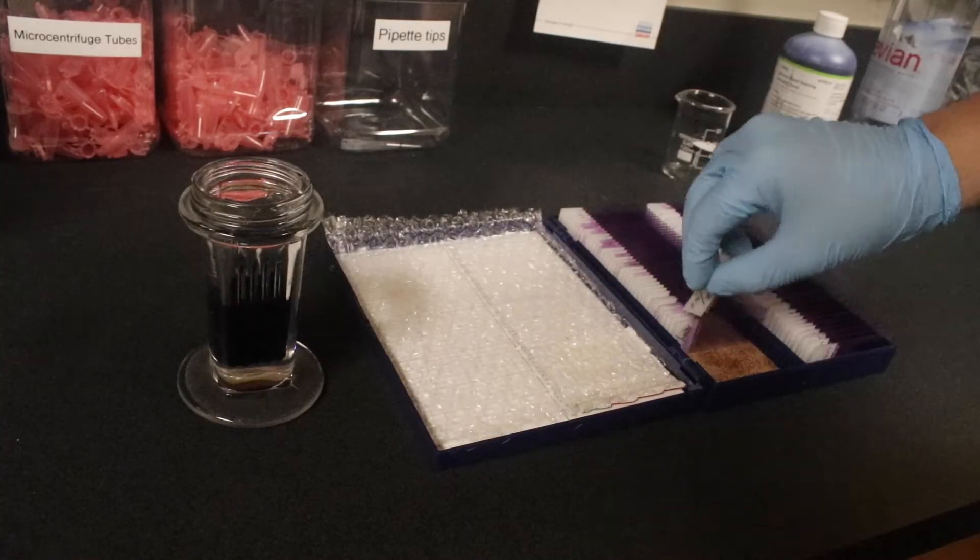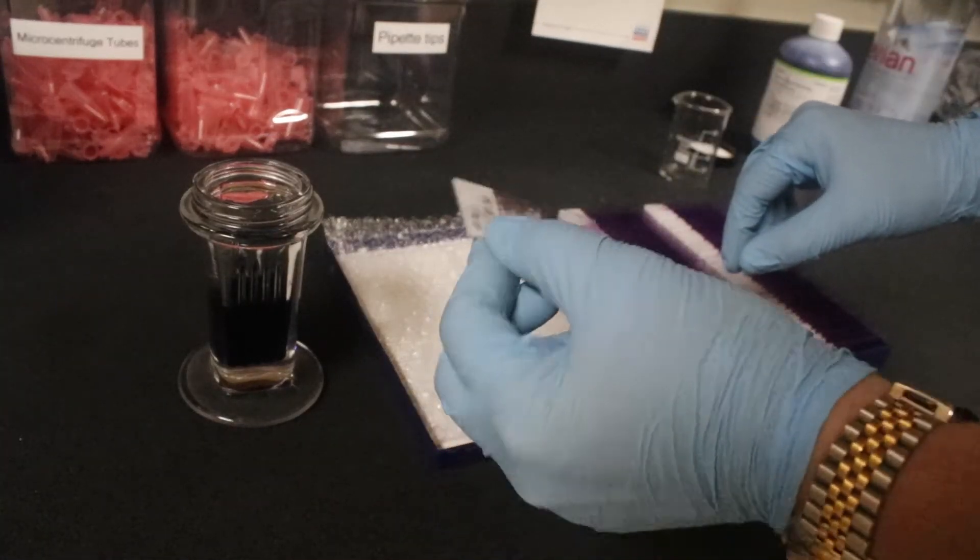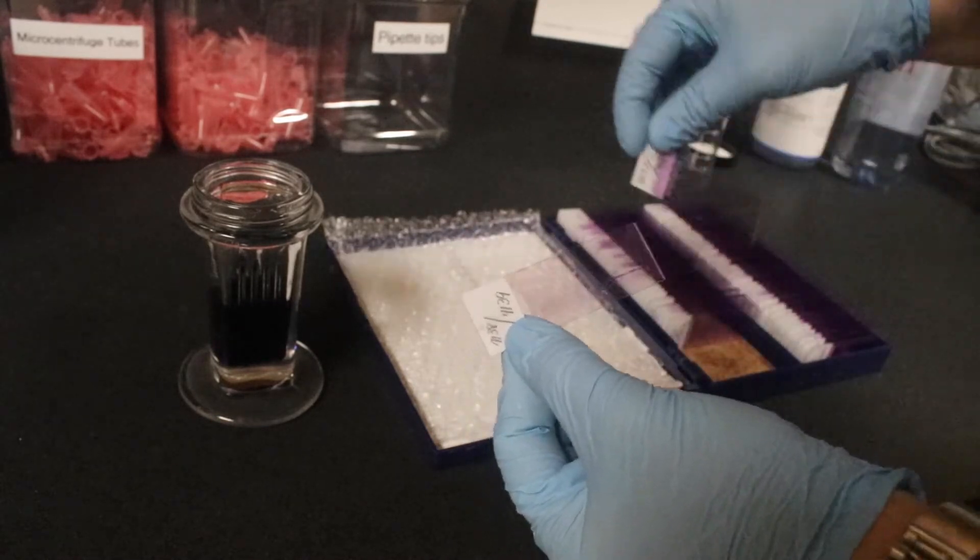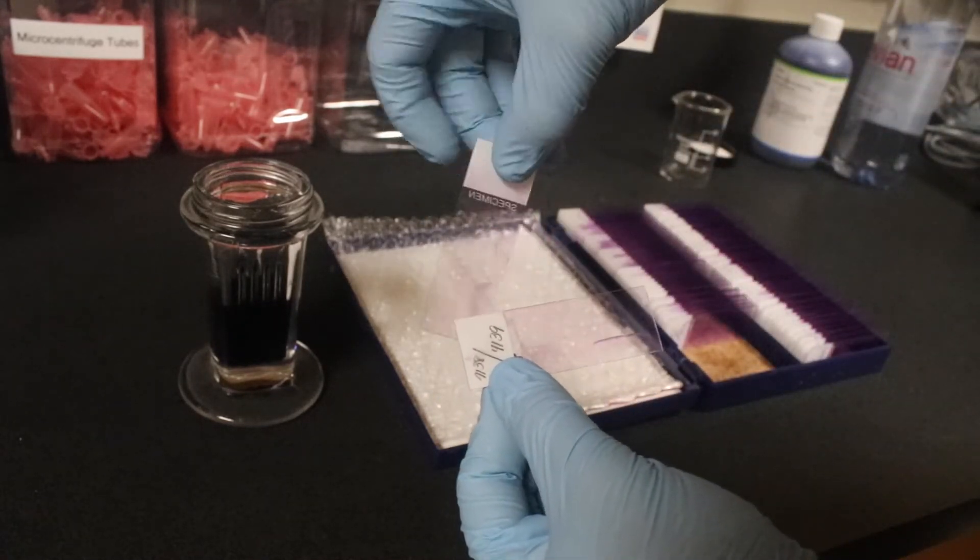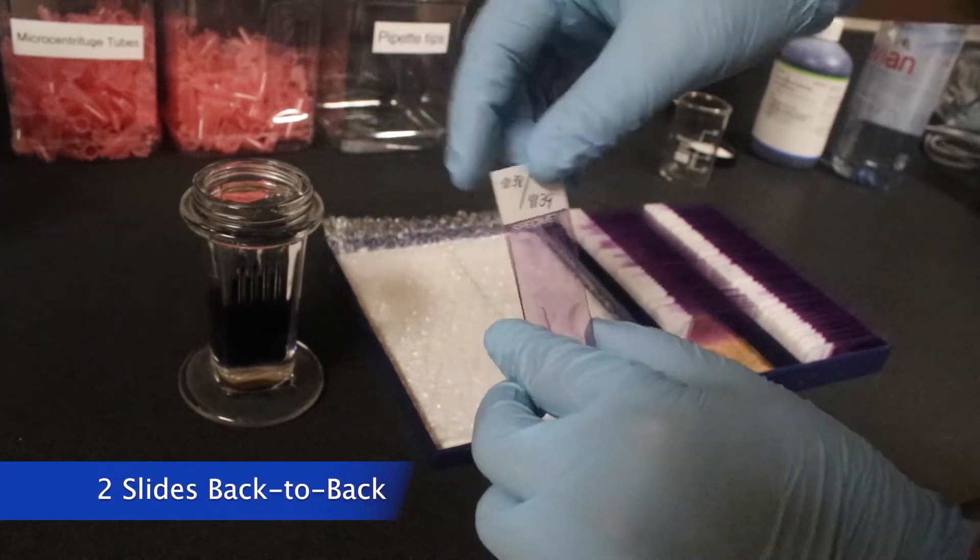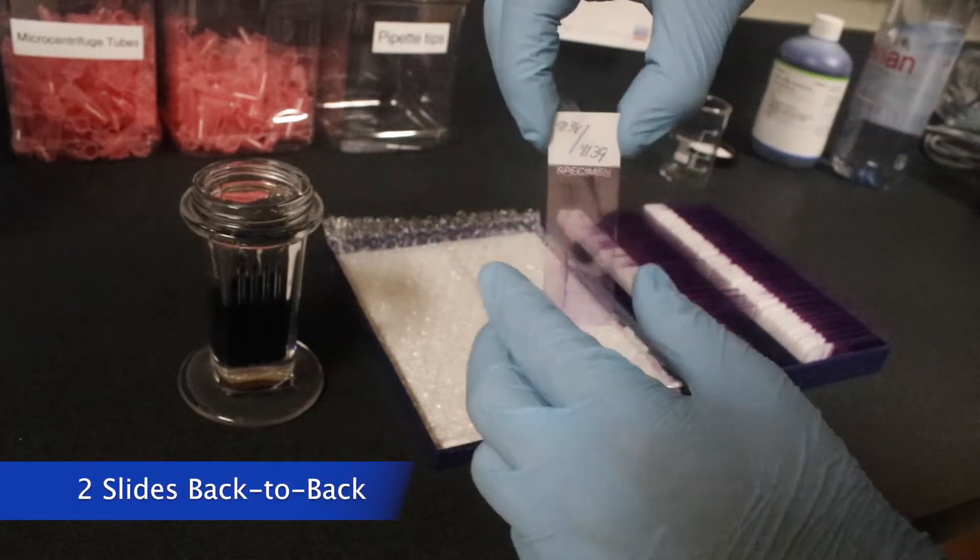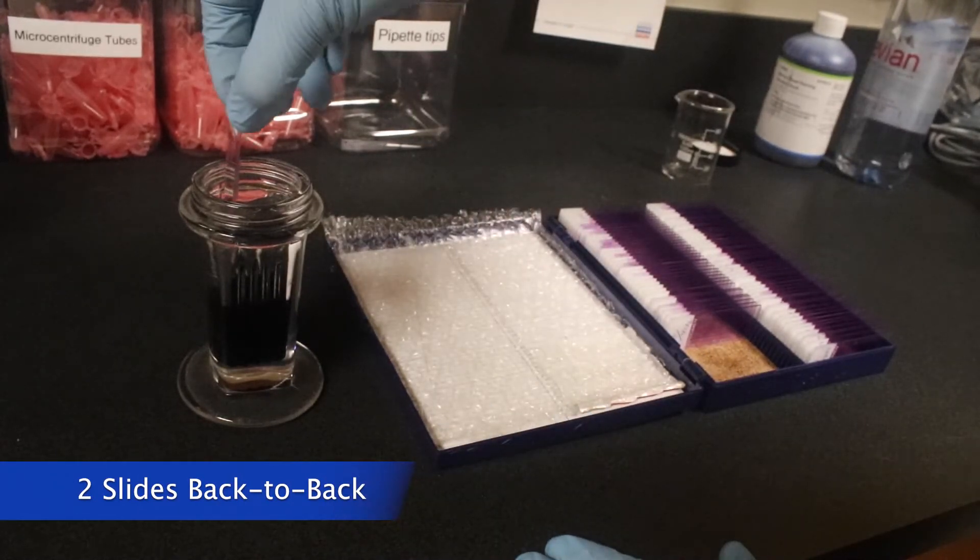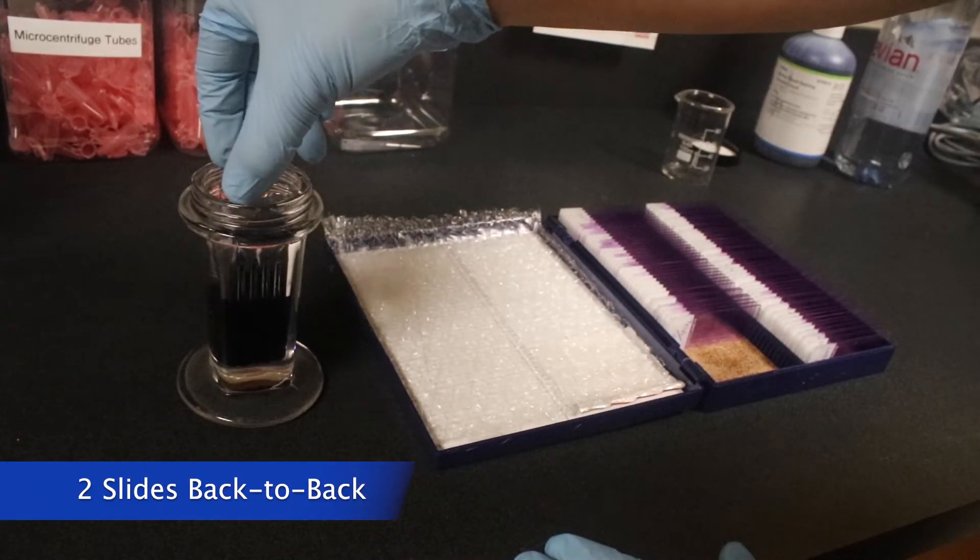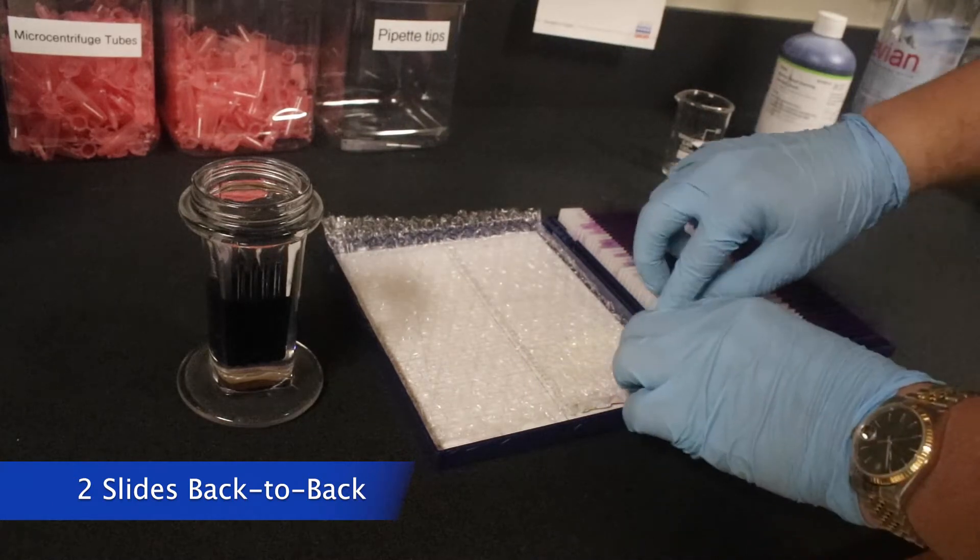After you mix the buffer water with the Yamsa concentrated stain, it's time to put in the slides. So, you can fit 10 slides in this Coplin jar, and the way we do that is putting them back to back. The Coplin jar has five slots, but each slot can fit two slides.